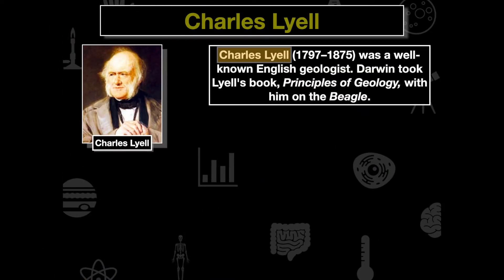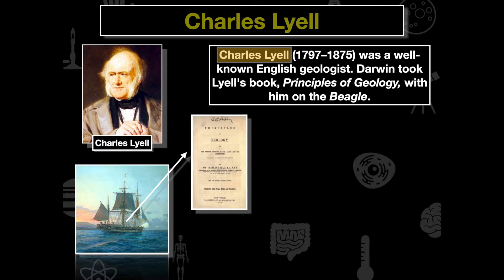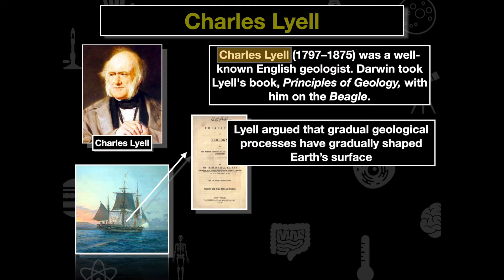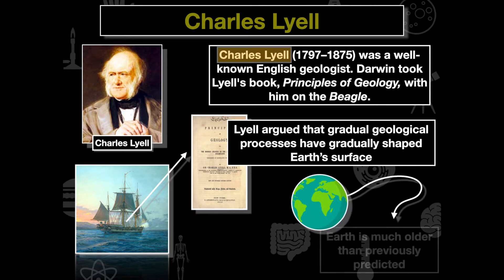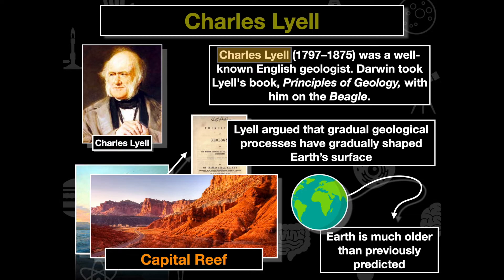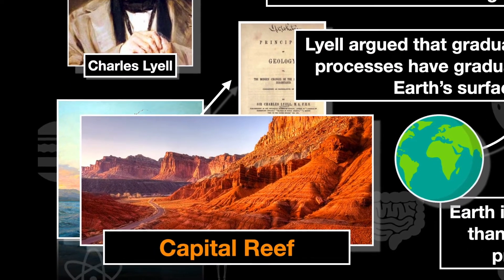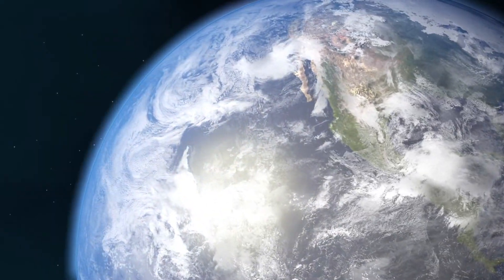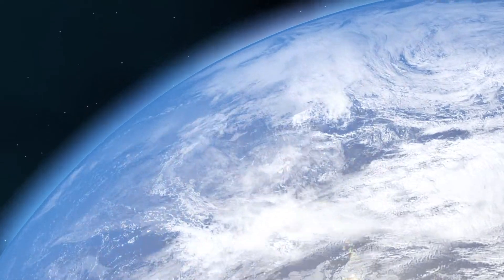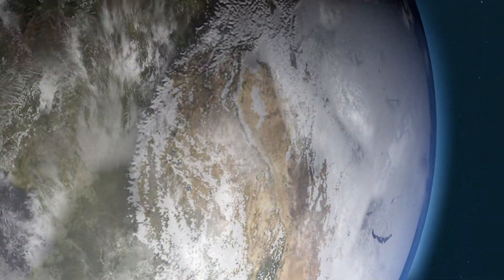Lyell was a geologist, and Darwin read his book The Principles of Geology and took it with him on the Beagle. Lyell argued that gradual geological processes have shaped the Earth's surface. People previously thought the Earth was maybe four to six thousand years old, but these geological processes take millions and millions of years. Because of this, we can infer that if the Earth is older than previously thought, there is plenty of time for evolution to occur over many many generations.